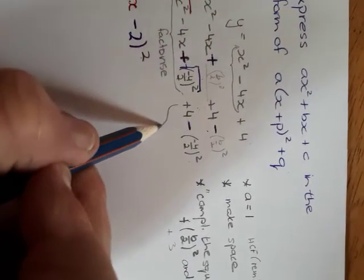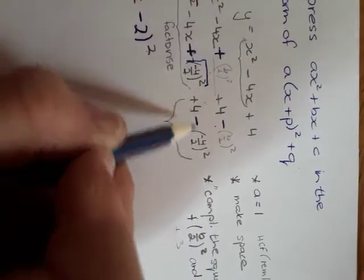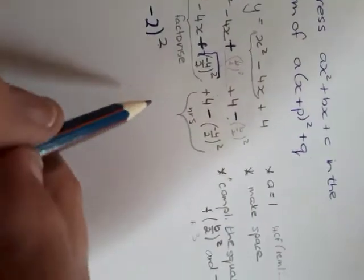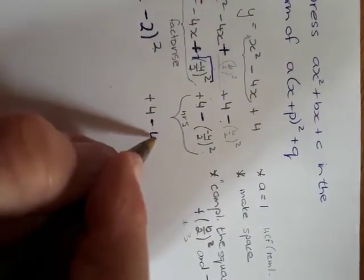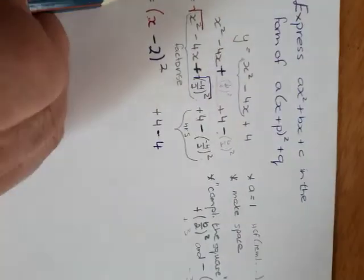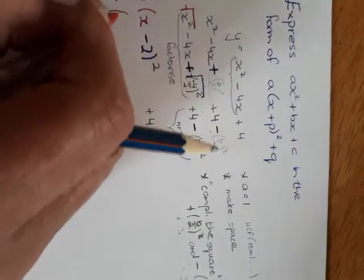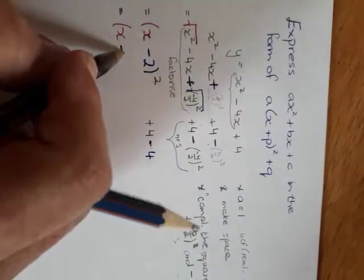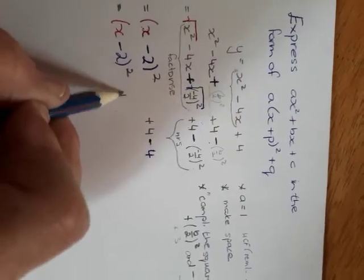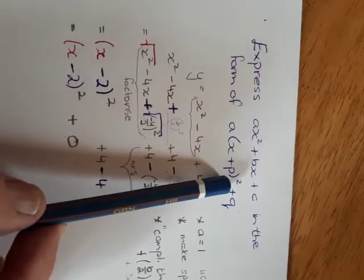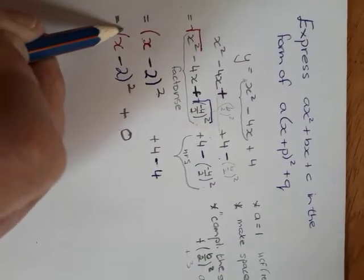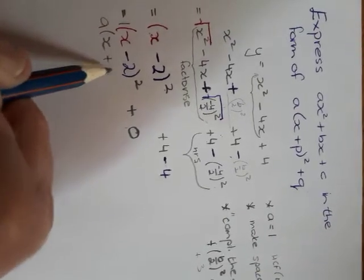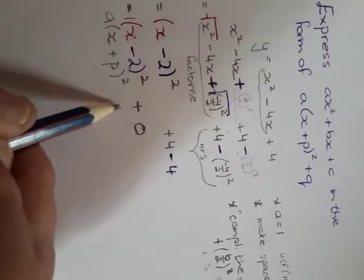Then, for this here, because they are only numbers, 4 and that, we can simply now calculate that. That's plus 4, and then that gives me minus 4. So plus 4 and minus 4 equals 0. So I've got my bracket minus 2 squared plus 0. And this now has the format of A in bracket X plus B squared plus Q. In this case, A really is 1. Then we have X plus B in bracket squared plus Q.